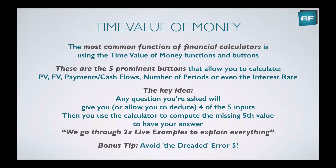Here's the key idea: any question you're asked in a test will give you, or allow you to deduce, four of the five inputs. Then you'll use the calculator to compute the missing fifth value, and there's your answer. So there are five inputs, and if you have four you can calculate the fifth. The question will give you the four, or allow you to work out the four. We're going to go through two live examples to explain everything, and there'll also be a bonus tip about how to avoid the dreaded Error 5.